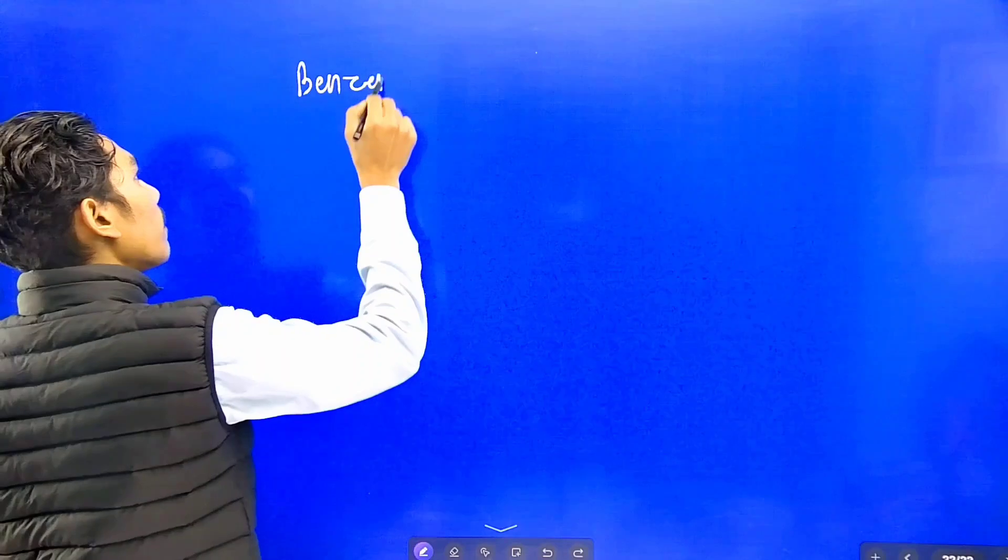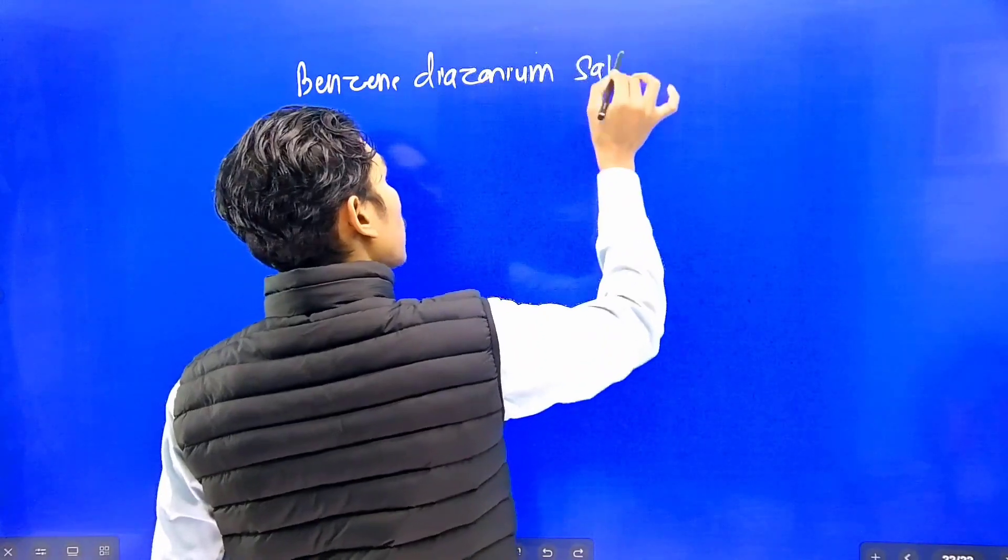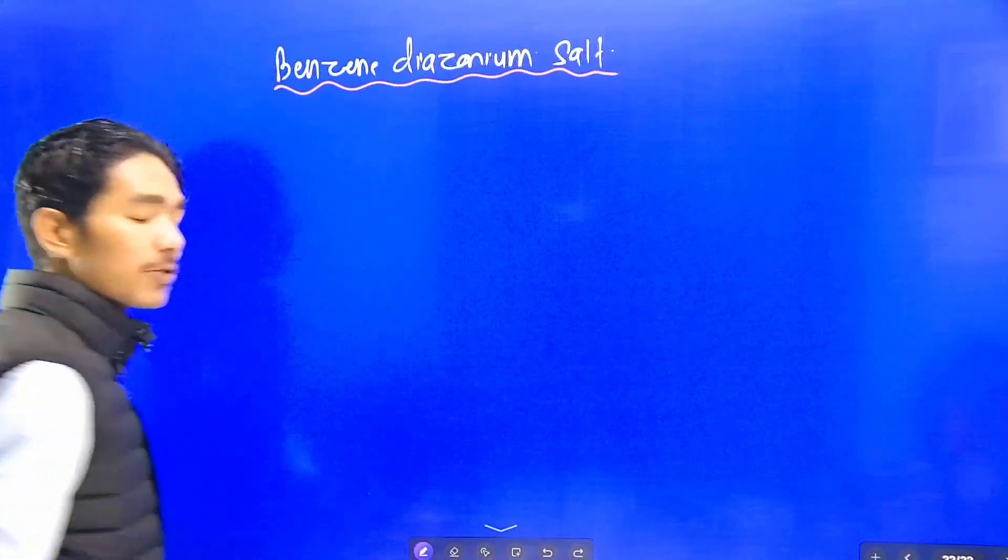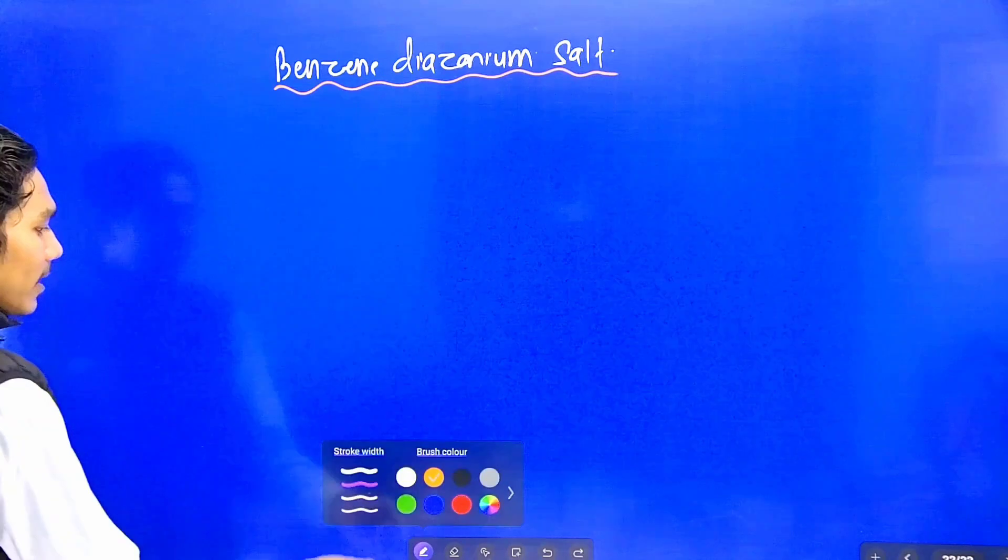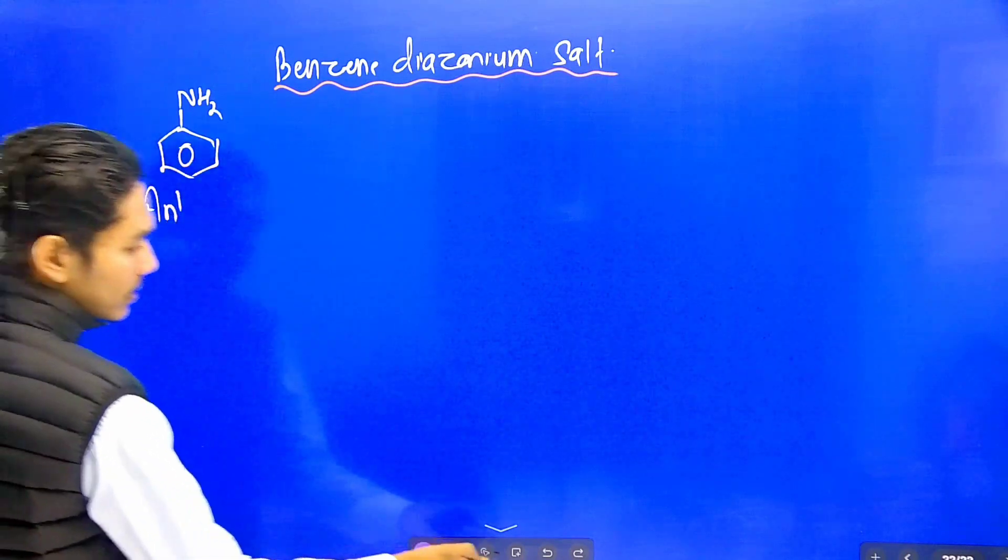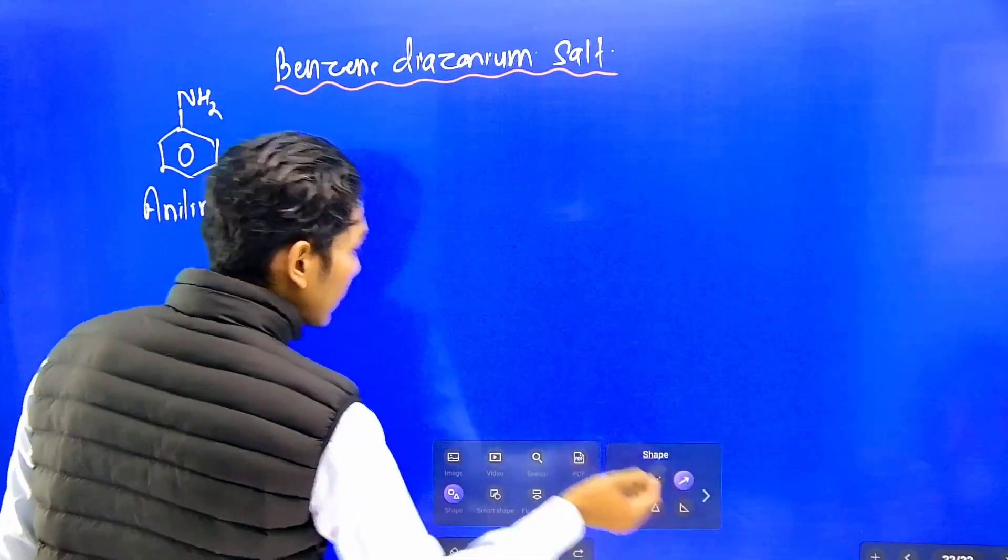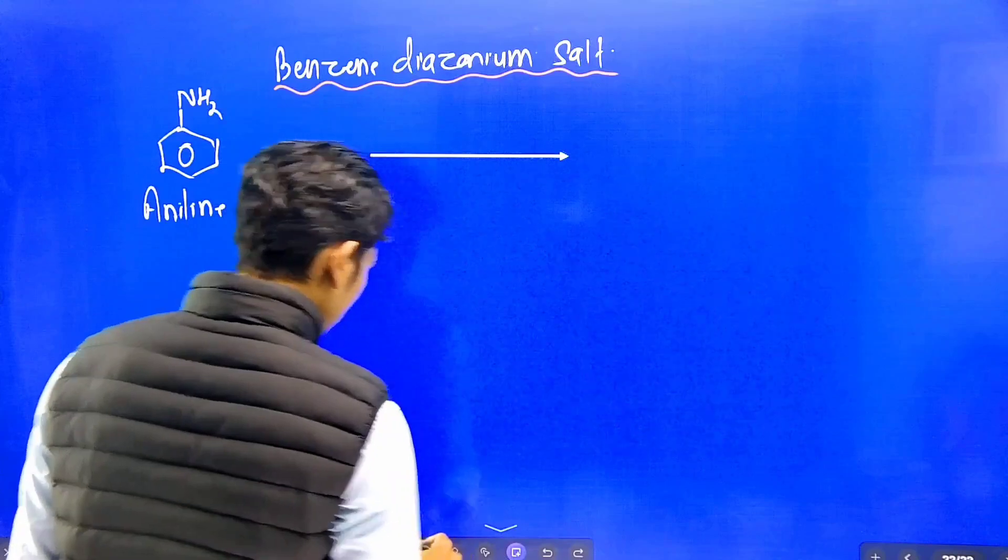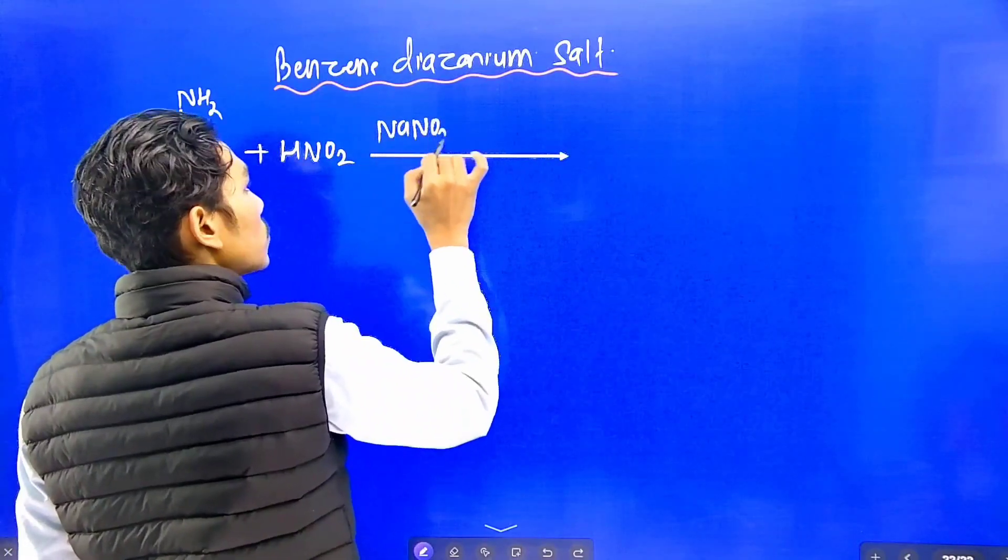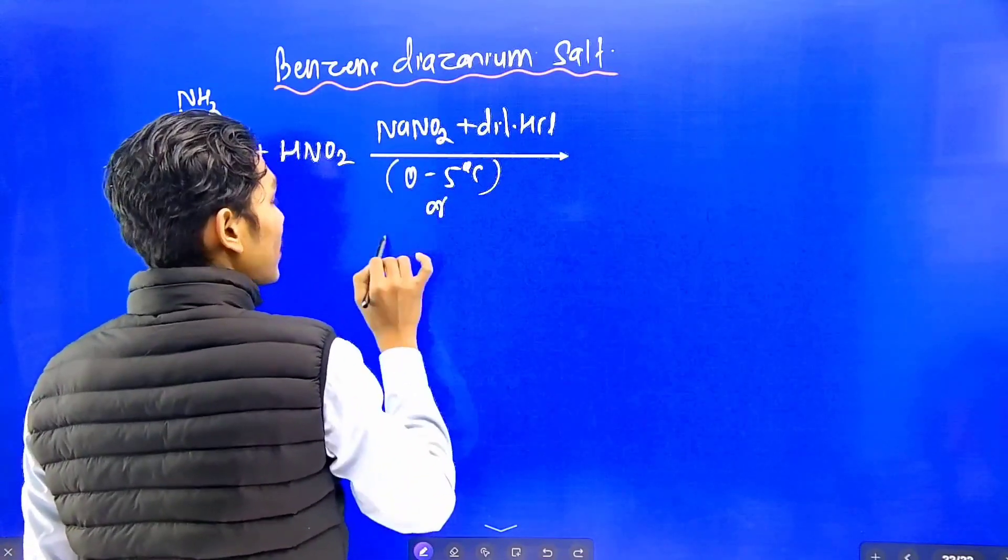We will discuss benzene diazonium chloride, benzene diazonium salt. When we take aniline and react it with HNO2, that is nitrous acid, with diluted HCl at 0 to 5 degree Celsius under ice cold conditions, this reaction takes place.